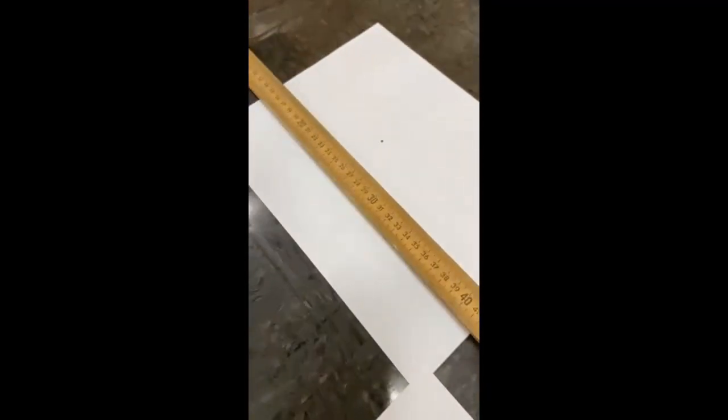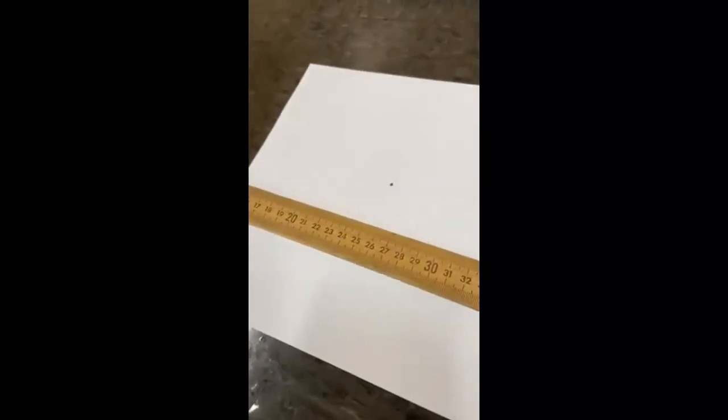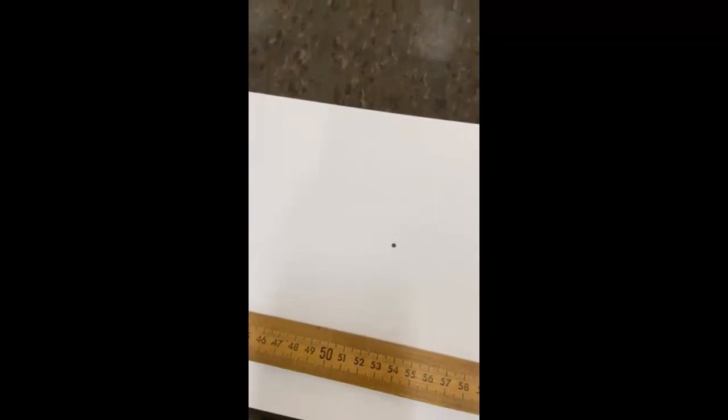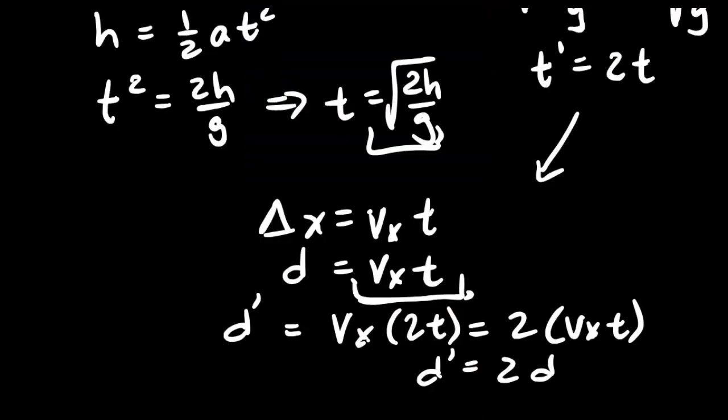Now let's compare the distances. Removing the first carbon paper, you can see where it landed — about 25 to 26 centimeters. The second carbon paper shows the ball landed at roughly 52 centimeters. Since 26 times 2 is 52, that's twice the distance, confirming our result. If you found this video helpful, check out my next video on how to solve projectile motion problems.